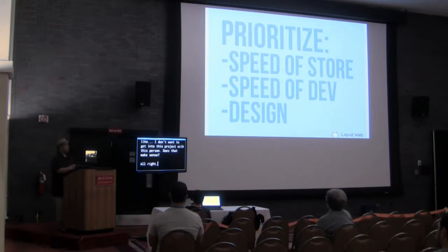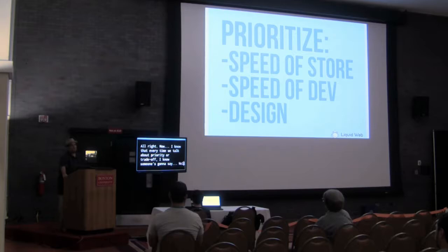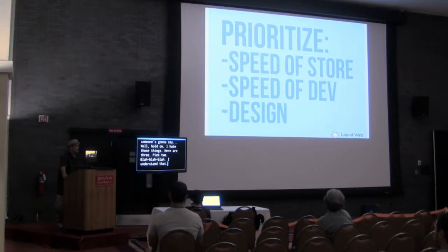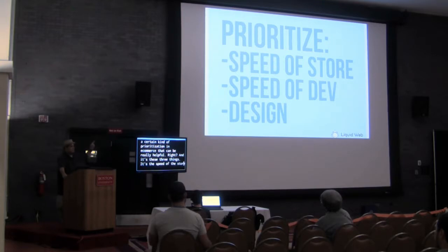When talking about priority or trade-offs in e-commerce, there are three things: the speed of the store, the speed of the project itself, and the design. Every one of those has a cost factor when it comes to time. If you want elaborate design with custom templates for every category and product page, there's going to be significant time and design cost.